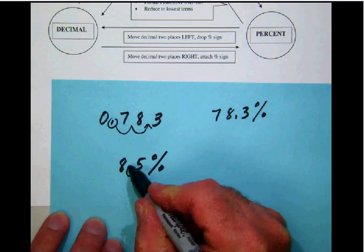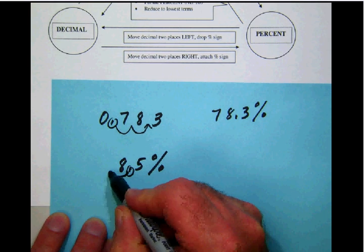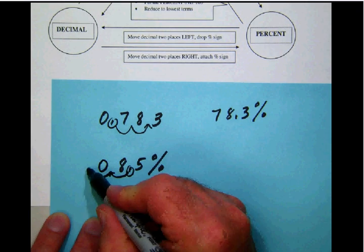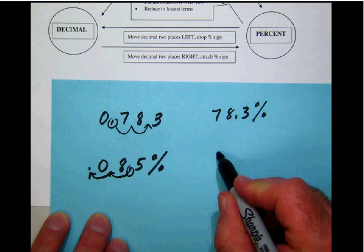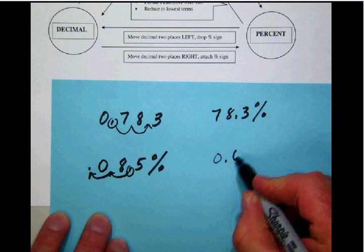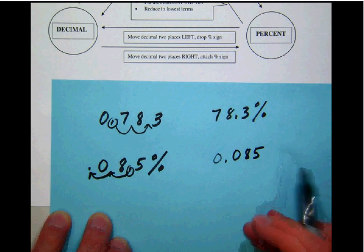Now, in this case, our decimal is here. We're going to have to move the decimal to the left, but there's no number here. So we're going to have to add a 0 and put the decimal in that spot. We will write that as 0. ALEKS likes a 0 to the left of the decimal, 0, 8, 5. And then we will drop the percent sign.